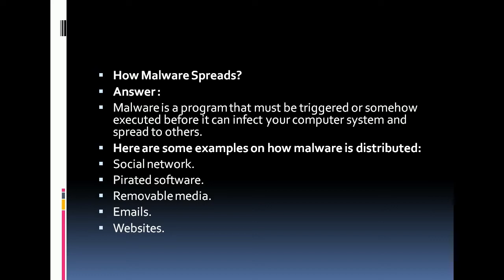The next question is: how does malware spread? Malware is a program that must be triggered or somehow executed before it can infect your computer system and spread to others. Examples of how malware is distributed include social networks, pirated software, and removable media such as hard drives, pen drives, or external USB drives.